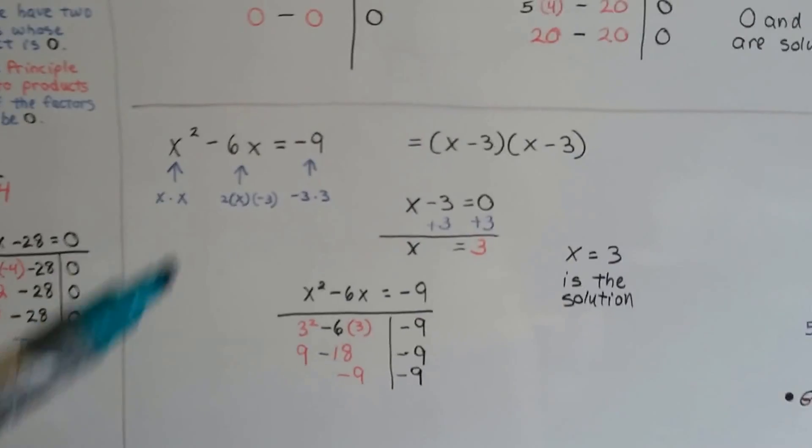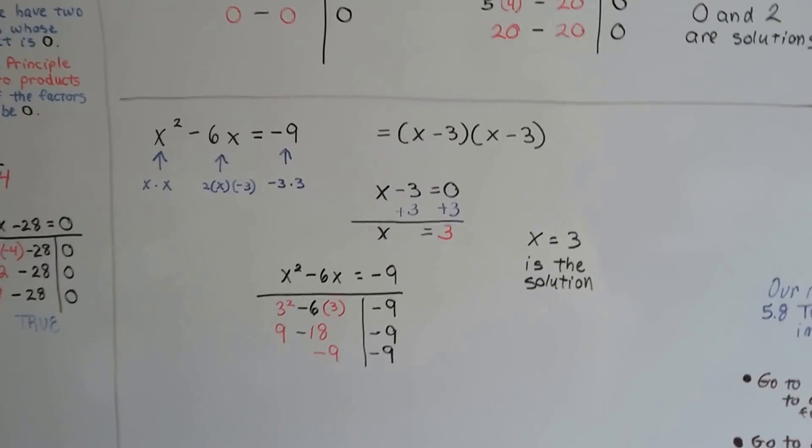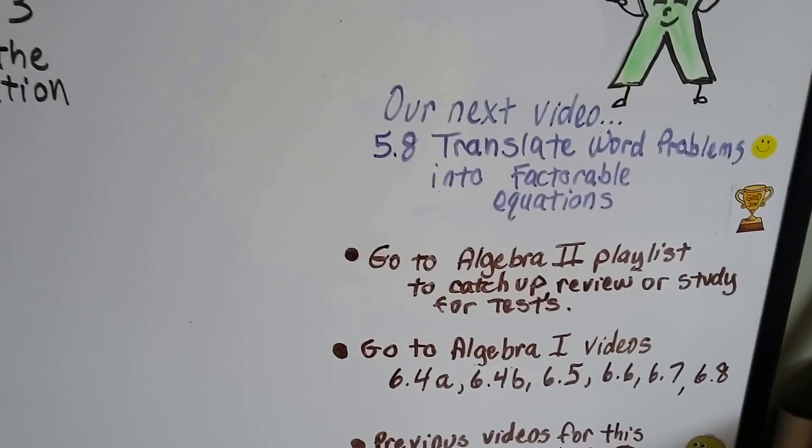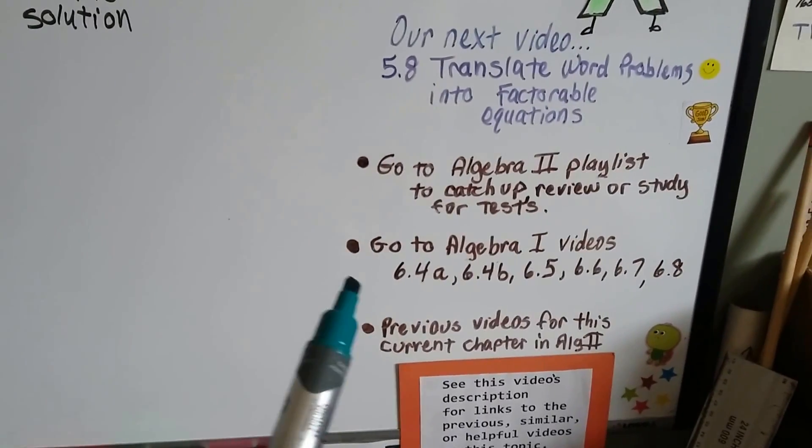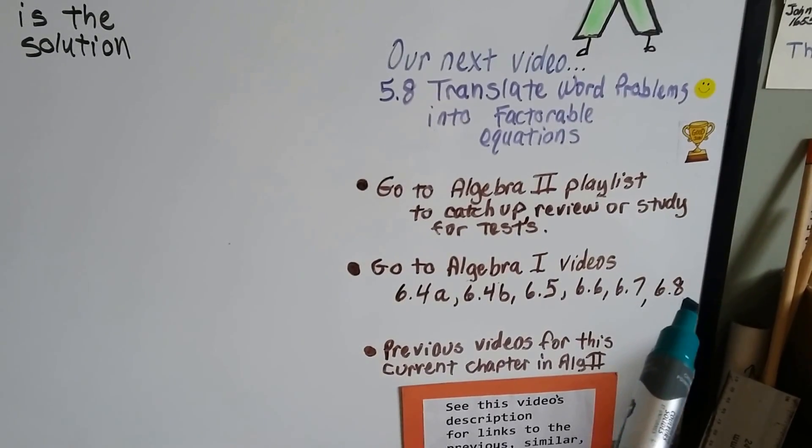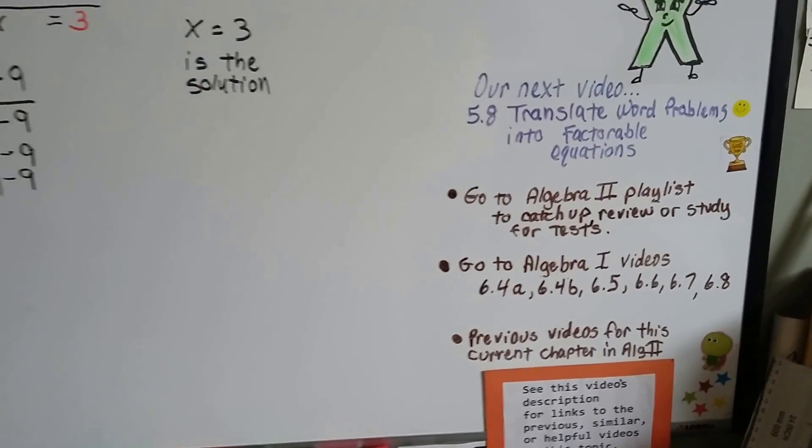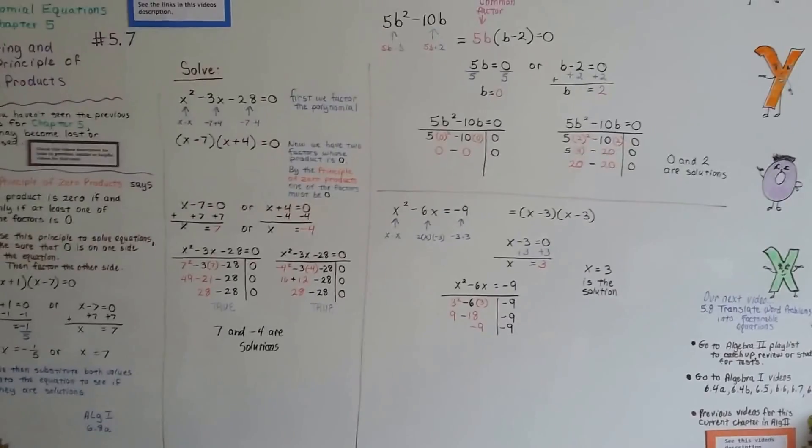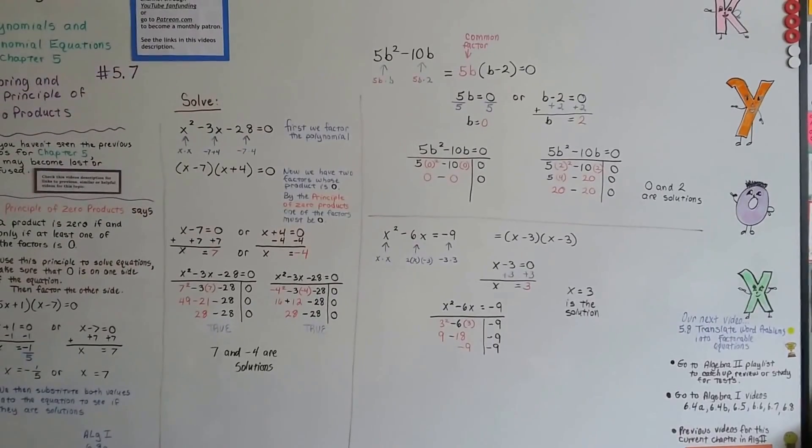This is the same thing we learned in Algebra 1. All we're doing now is factoring the polynomial before we do the principle of zero products. Our next video, 5.8, we're going to translate word problems into factorable equations. I'm going to add this video to the Algebra 2 playlist for studying. I'm going to have the Algebra 1 videos, including 6.8 that talks about principle of zero products, in this description, so you can just click on it and any of the previous videos for this chapter that might be pertinent and might be able to help you. So we're going to go on to 5.8, and I hope this was informative and helpful, and I hope I'll see you in the next video. Bye!